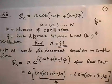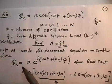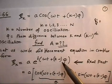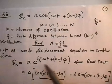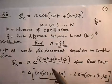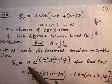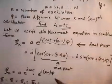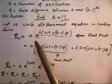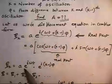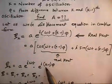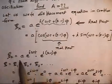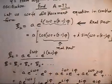This is the complex notation of any disturbance. The disturbance can be written as a·e^(i(ωt + (k−1)φ)). If I take the magnitude, since |e^(iθ)| = 1, I get the amplitude a. I can factor this as a·e^(iωt) · e^(i(k−1)φ).